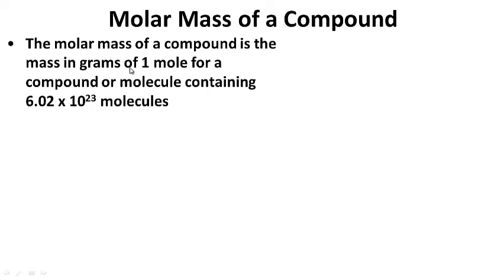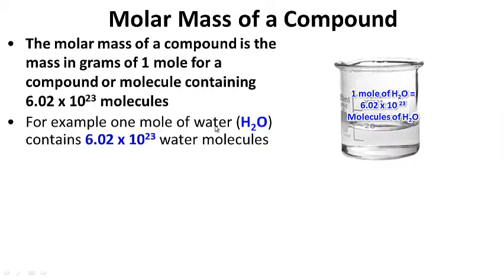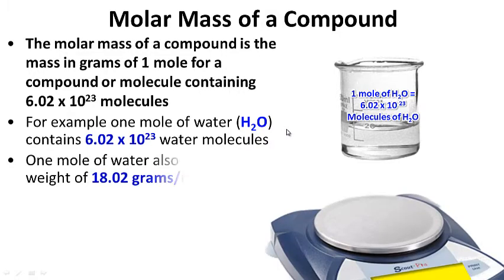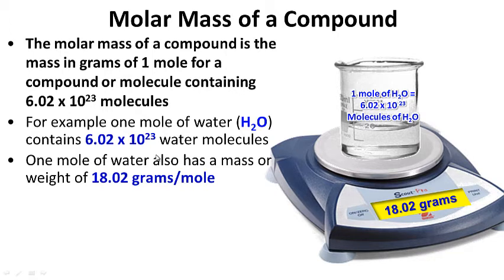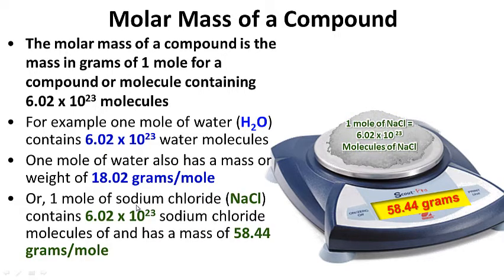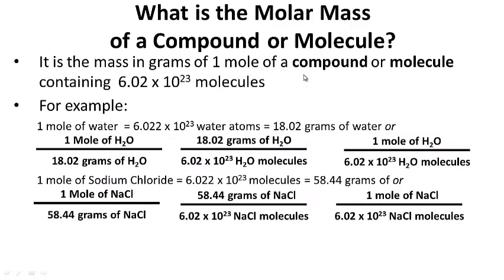The molar mass of a compound — we're not talking about individual atoms, now we're looking at molecules or compounds. The molar mass of a compound is the mass in grams of 1 mole for a compound or molecule. For example, 1 mole of water, H2O, contains 6.02 times 10 to the 23rd water molecules, and if we were to put 1 mole of water on a scale, it would have a mass of 18.02 grams per mole. A mole of sodium chloride contains 6.02 times 10 to the 23rd sodium chloride molecules and has a mass of 58.44 grams per mole. Go ahead and pause this while you write your notes on what the molar mass of a compound or molecule is.